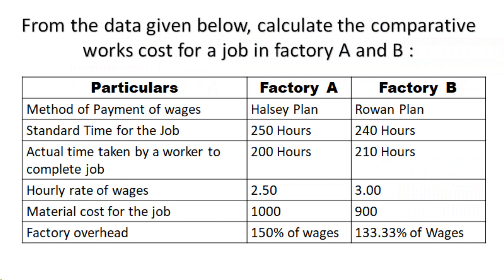There are two factories. The method of payment of wages: factory A is using the Halsey plan and factory B is using the Rowan plan. The standard time for the job is 250 hours for factory A and 240 hours for factory B. Actual time taken by a worker to complete the job: factory A is 200 hours and factory B is 210 hours. The hourly rate of wages for factory A is 2.50 and for factory B it is 3.00.